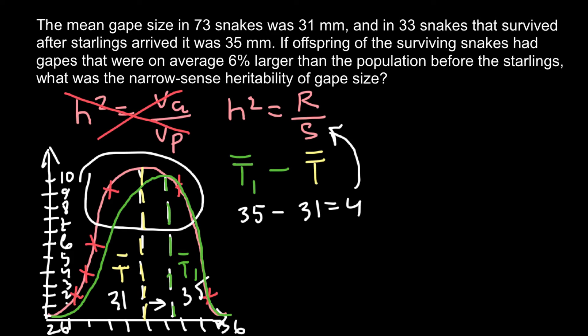And R in our formula stands for the response to selection. And what was the response? According to our problem, if offspring of the surviving snakes had gapes that were on average 6% larger than the population before, that means that to the mean of the gape size of the original population, we have to add 6%, or in other words, we have to divide 31 by 100 and multiply by 106 in order to find plus 6%. And the answer would be 32.86 millimeters. And this is going to be the mean of the F1 generation.